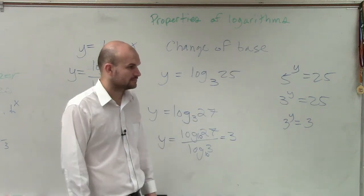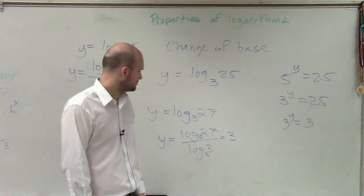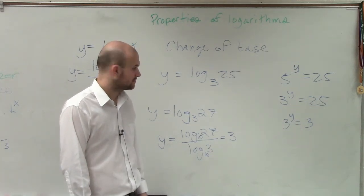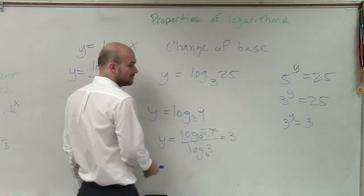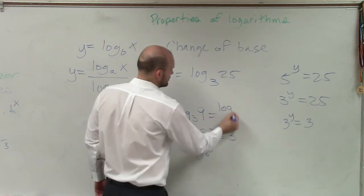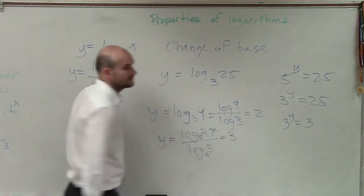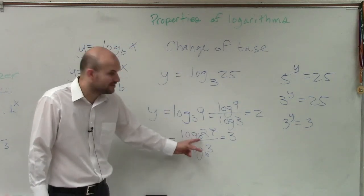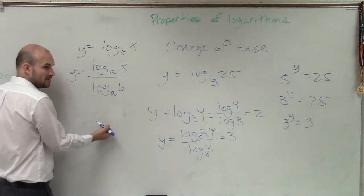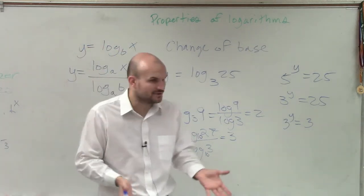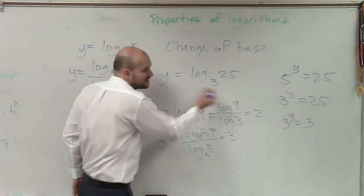A student asks why the answer is 3. The answer is 3 because that's the result. When doing the change of base, 'a' can be any base you want to use — you could even make it 7. When you do the change of base, the base 'a' doesn't matter; it can be any base you want.